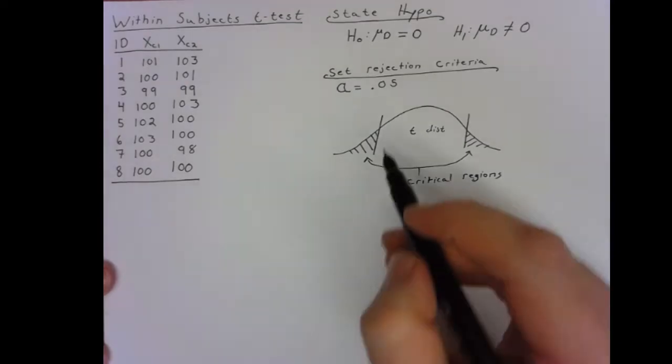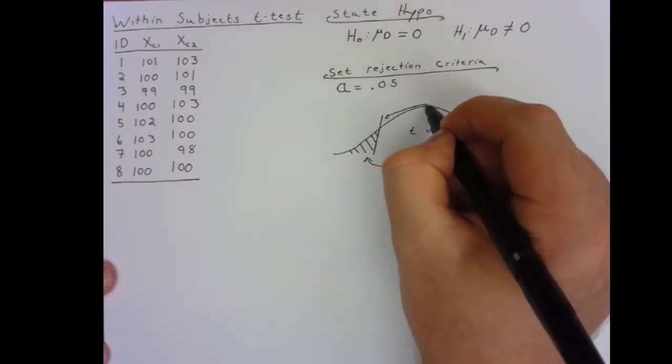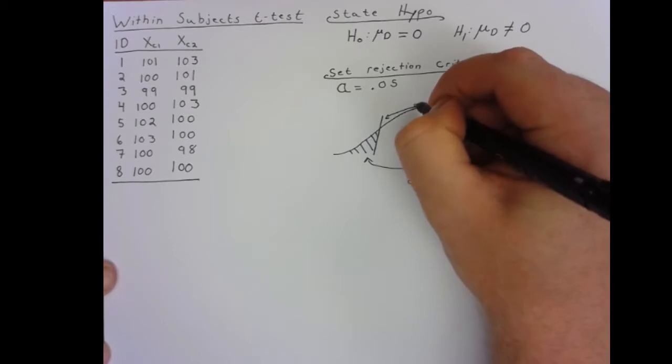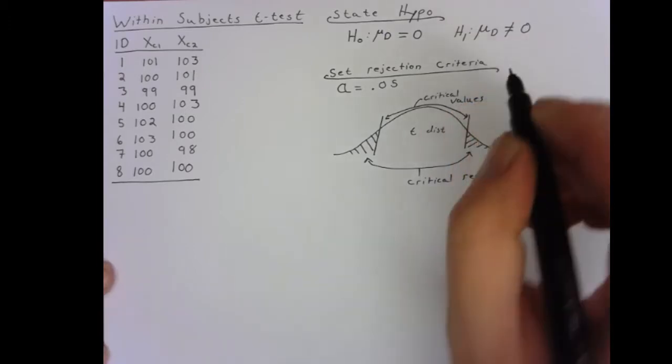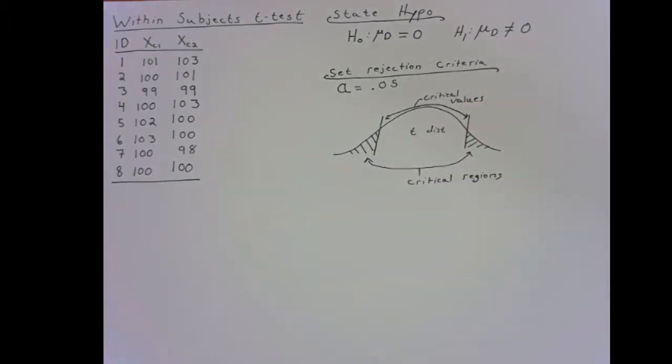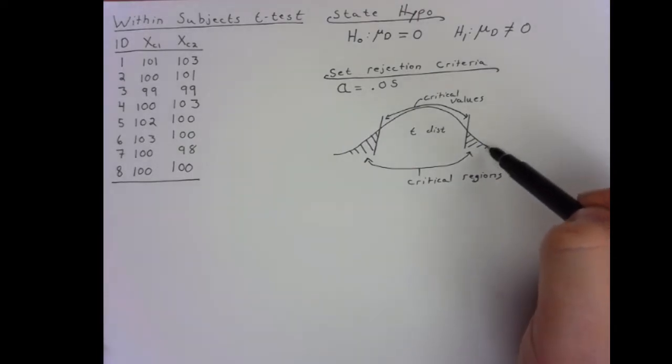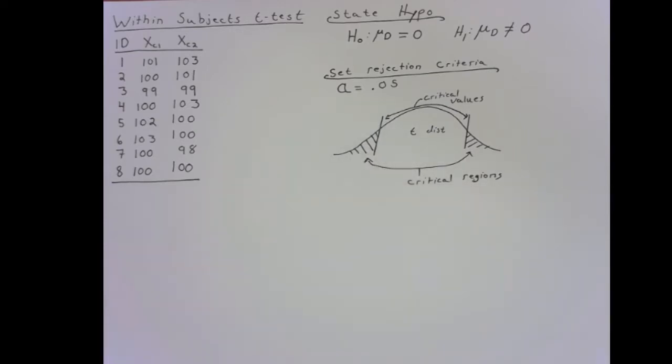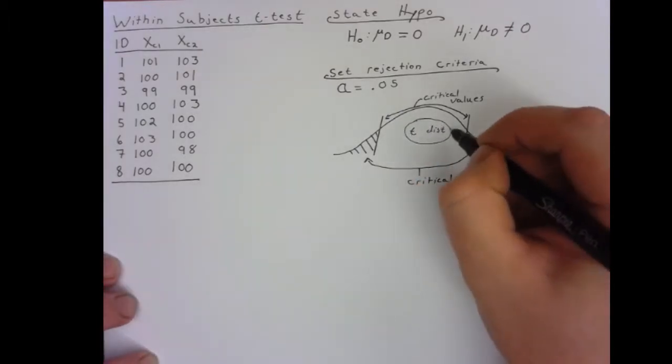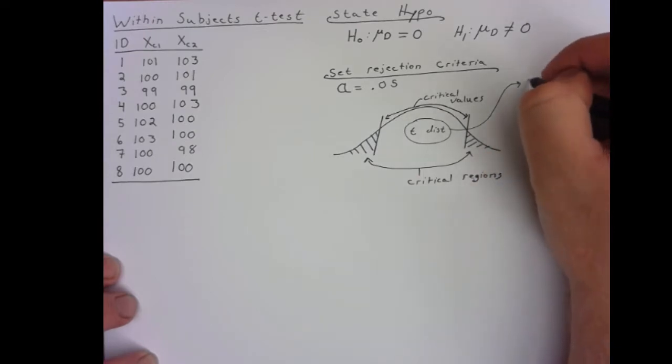Those critical regions are bound by critical values. And it's these critical values that we will now need to look up in a table in order to know if whatever test statistic we get at is greater than the upper critical value, placing it in this critical region, or less than this critical value, placing it in the lower critical region. To do that, there's still one more piece of information we need. This T distribution varies based on the degrees of freedom.